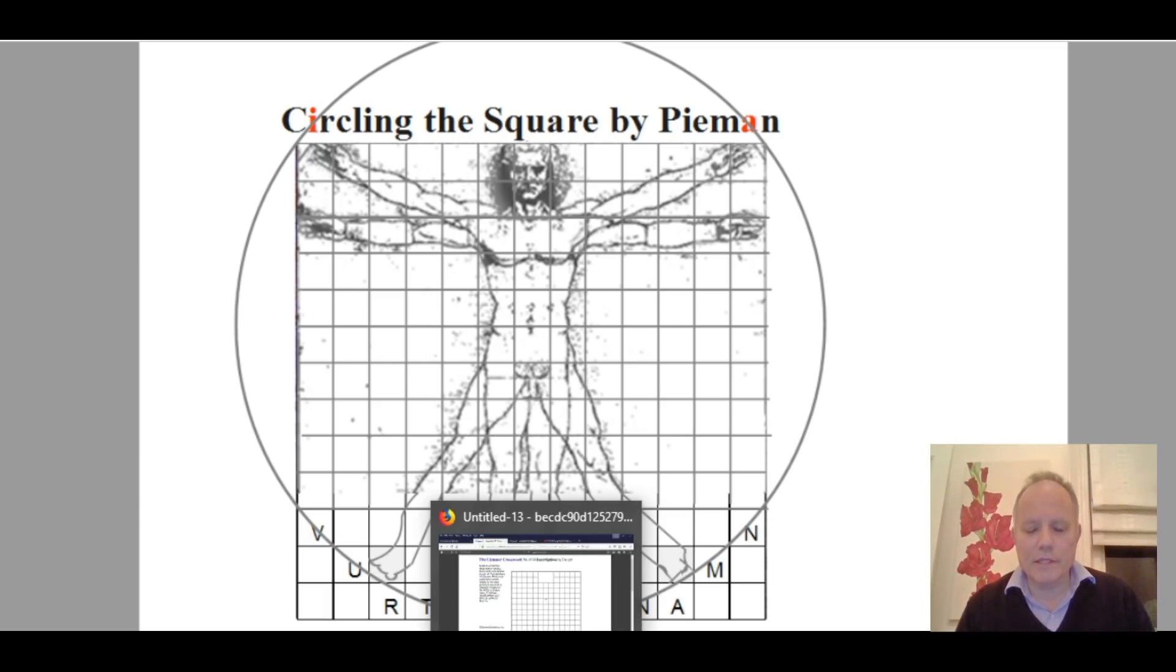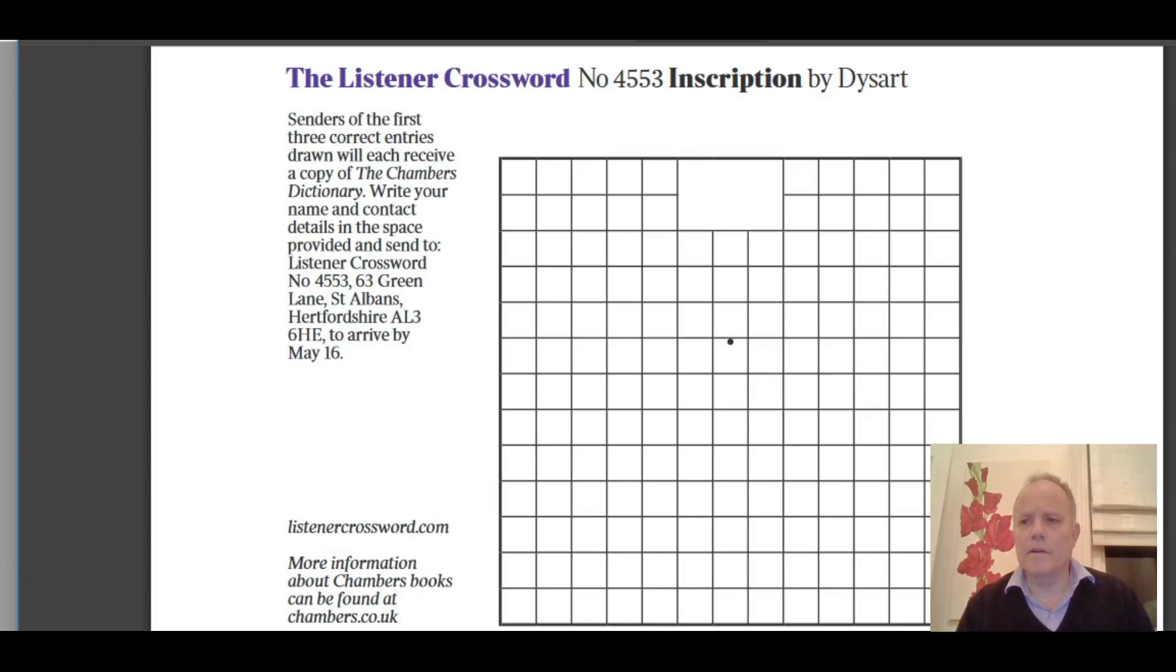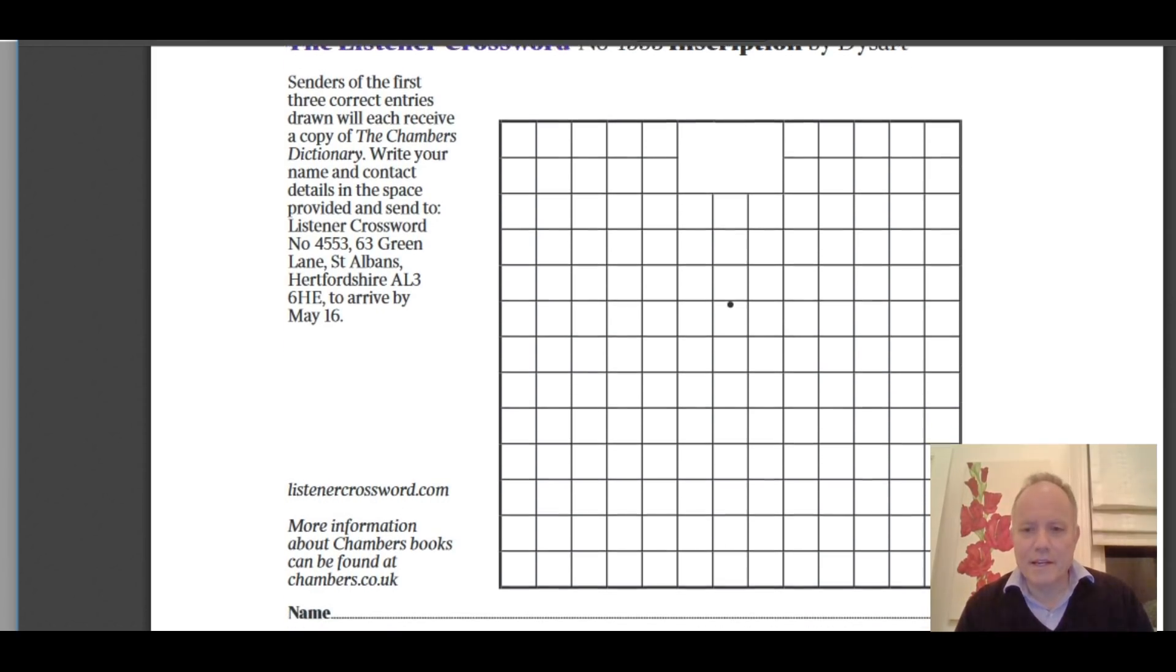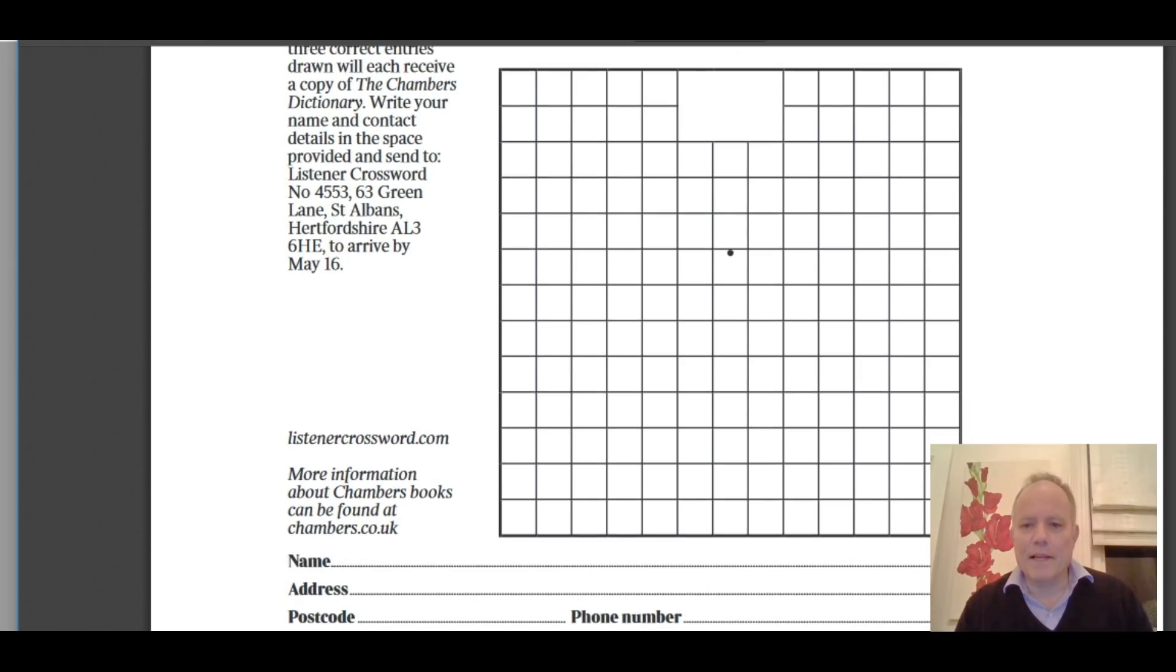Now I was planning to tell you about this a few weeks ago, and then suddenly something slightly strange happened in that the Listener, the regular crossword that was the inspiration for Magpie and the Times, published this puzzle three weeks ago, number 4553, Inscription by Dysart. Now when I saw this, this strange extra square at the top and a sort of blob in the middle, I did sort of vaguely think it's almost like it could be the Vitruvian Man again, but I expect that wouldn't be done again.